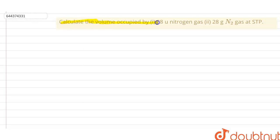Hello, so our question is we have to calculate the volume occupied by 28 u nitrogen gas at STP. This u is called unified atomic mass, which is also called atomic mass unit.